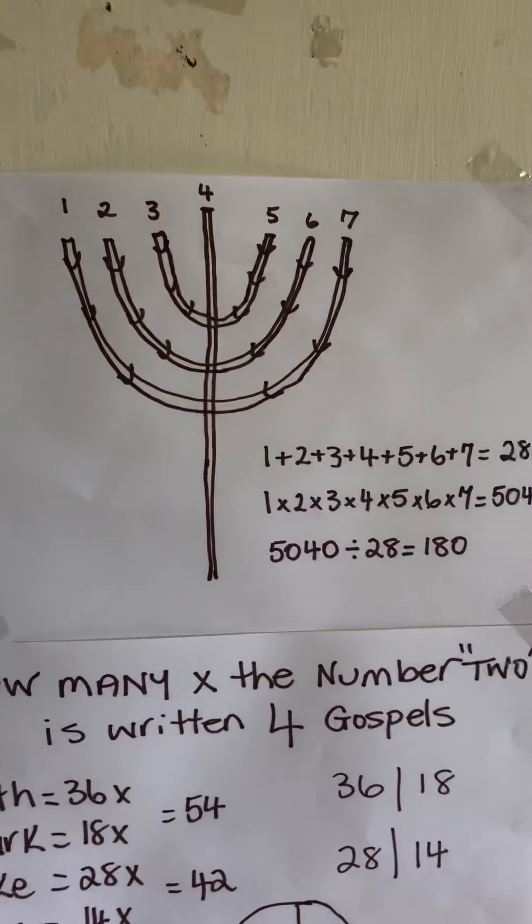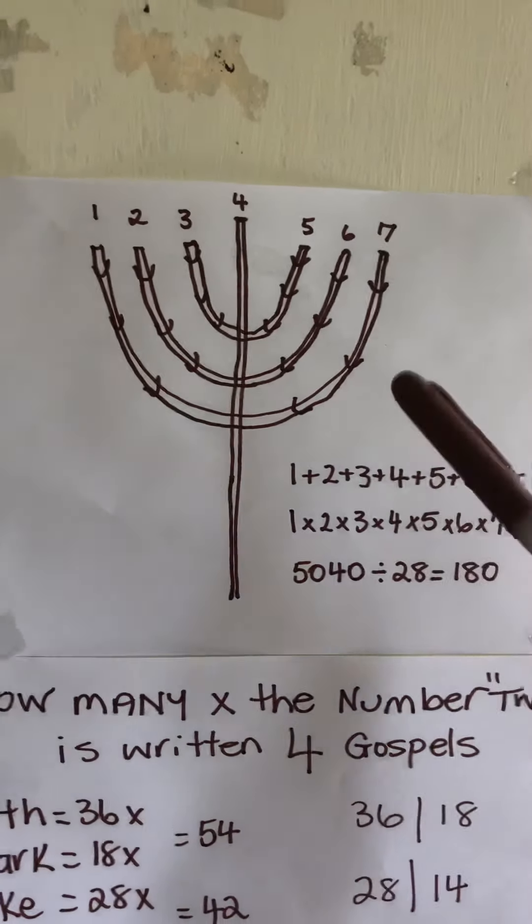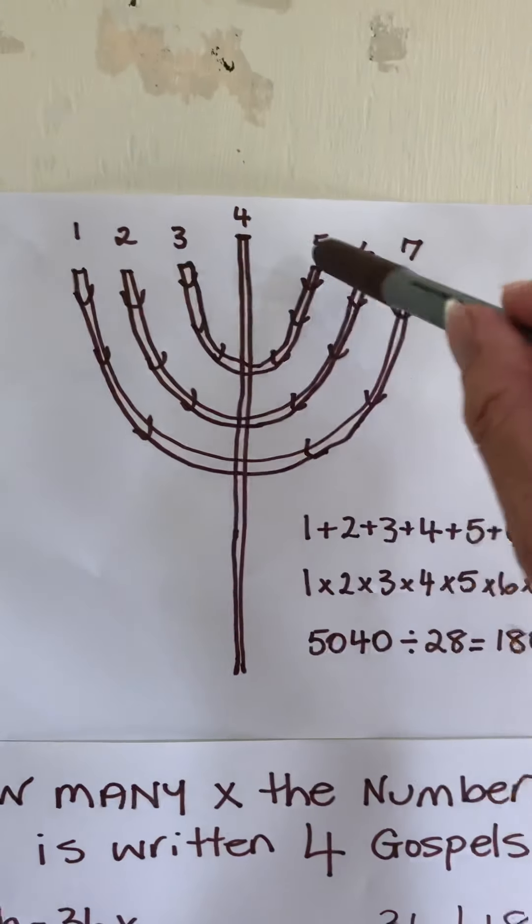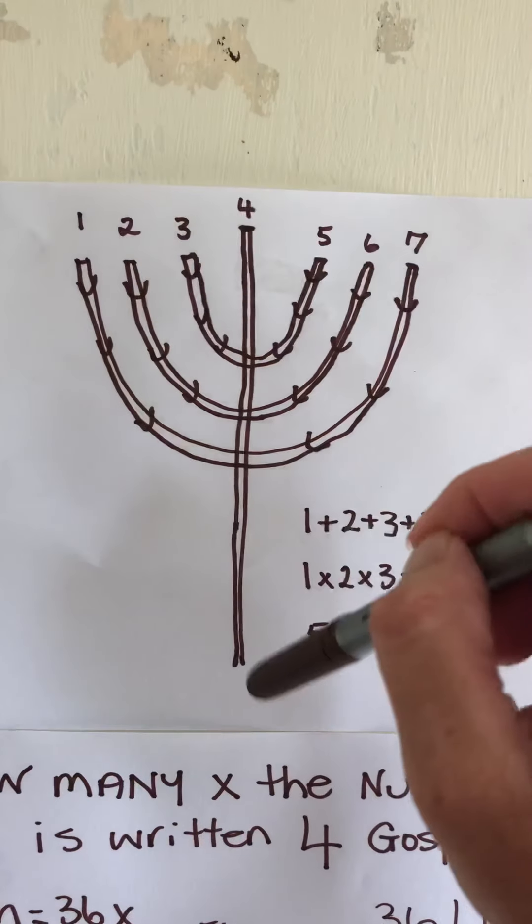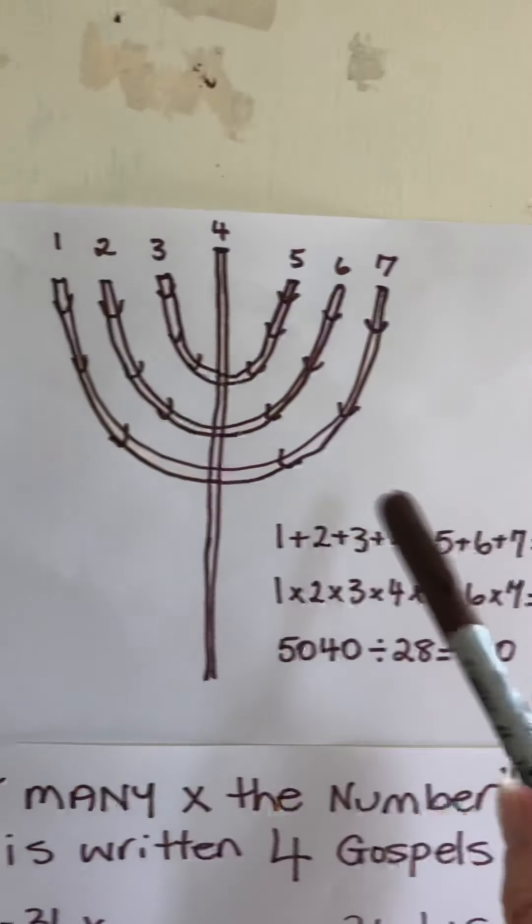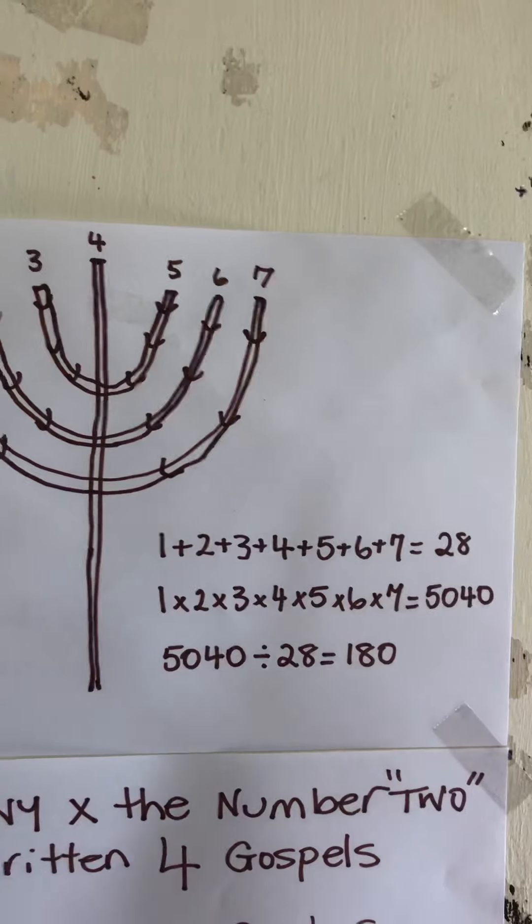This is the menorah. We see that if we have 1, 2, 3, 4, 5, 6 and 7, Jesus Christ walks in the midst of the seven golden candlesticks. When we add 1 plus 2 plus 3 all the way to 7, we get 28.